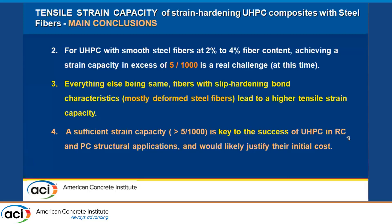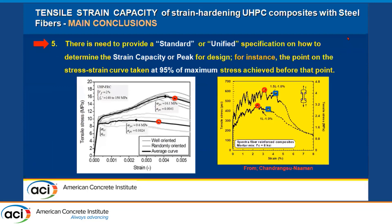When you reduce the size of a structure in UHPC, you also reduce the size of other costs, which influences the final result. An important recommendation: there is a need to provide a standard or unified specification on how to determine the strain capacity at peak for design — for instance, the point on the stress-strain curve at 95 percent of maximum stress achieved before that peak. When the curve is flat, this can yield 40 percent more strain. Tests with spectra fiber show that taking the 95 percent point gives 25 percent more strain. There is a need to standardize this so everyone follows the same procedure.